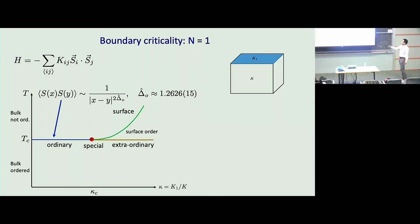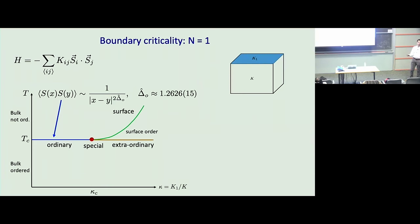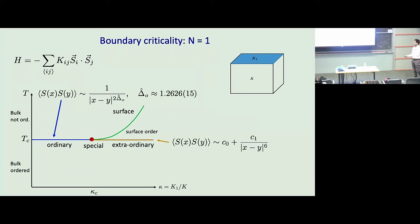If I crank up the surface coupling k₁ to be much larger than the bulk coupling, the surface will order before the bulk does. In two dimensions a discrete symmetry can be spontaneously broken, so we get a surface phase transition in the 2D Ising universality class — a phase where the surface is already ordered and the bulk is still paramagnetic. As I keep lowering temperature and hit the bulk critical temperature, I ask: how does the bulk order in the presence of this already-ordered boundary? This is known as the extraordinary boundary universality class.